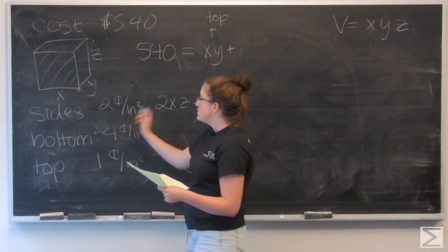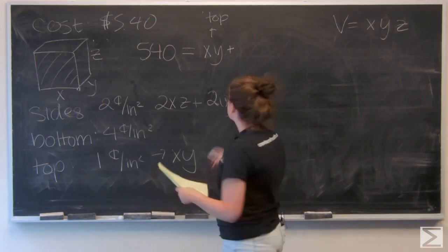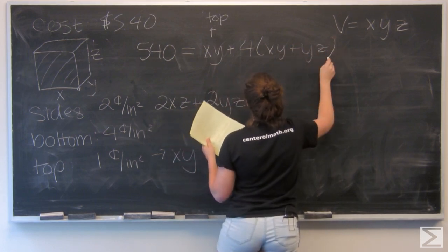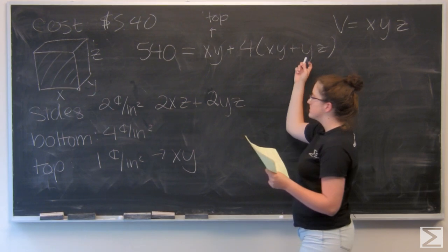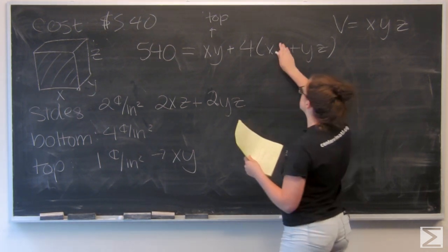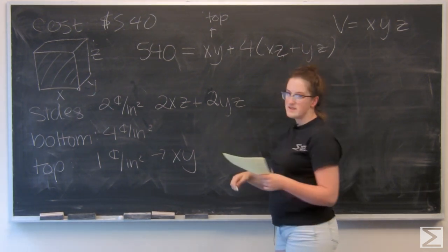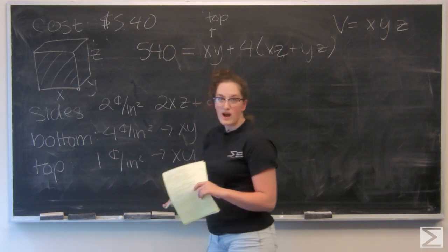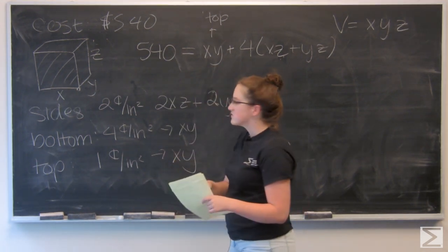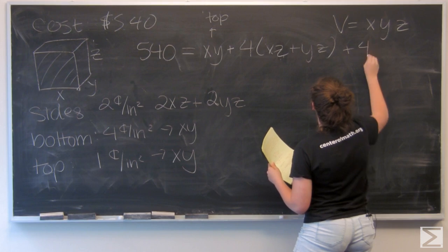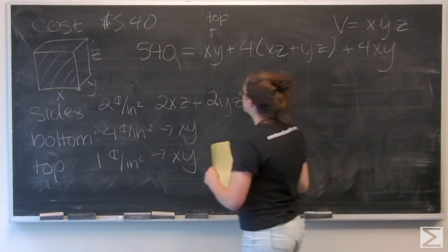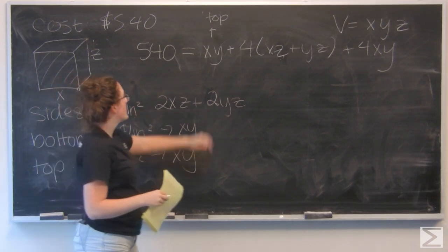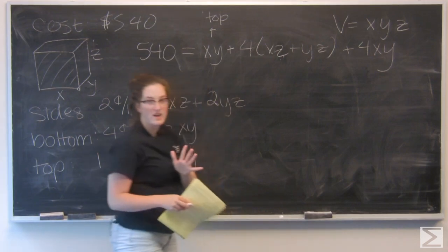Multiplying the side area by 2 cents gives the side cost: 2·(2xz + 2yz) = 4(xz + yz). The bottom also has area xy square inches, so it costs 4xy cents. Combining like terms, I have xy from the top plus 4xy from the bottom giving 5xy, plus the side cost term 4(xz + yz). So the full cost equation is: 5xy + 4(xz + yz) = 540.